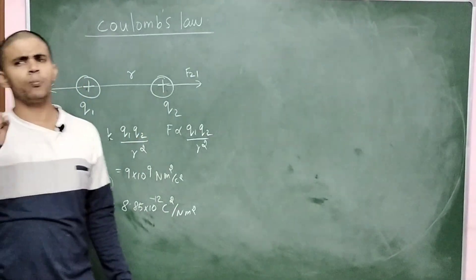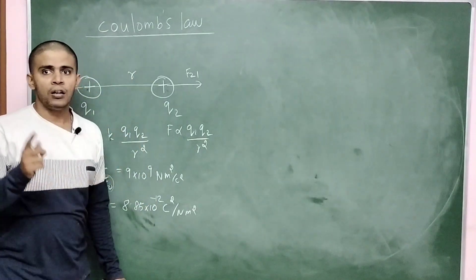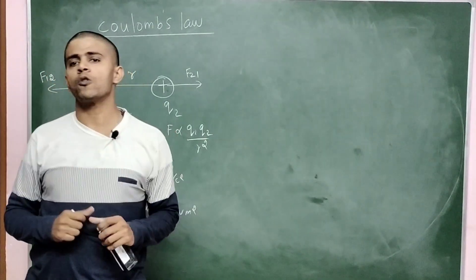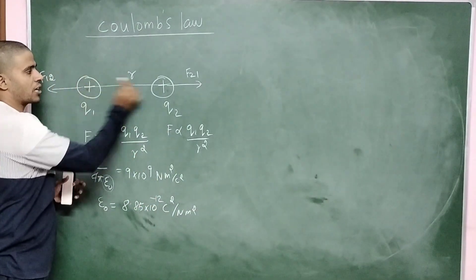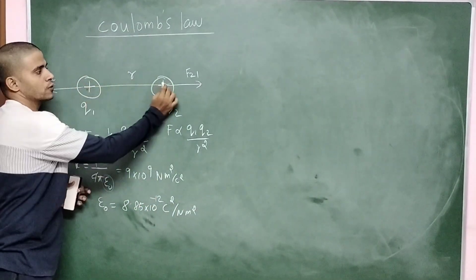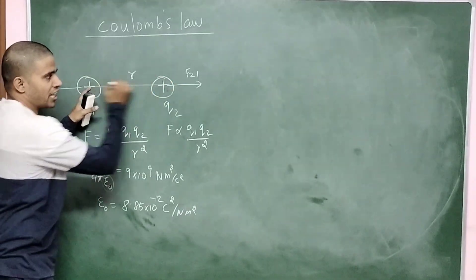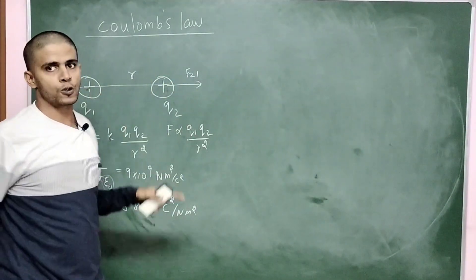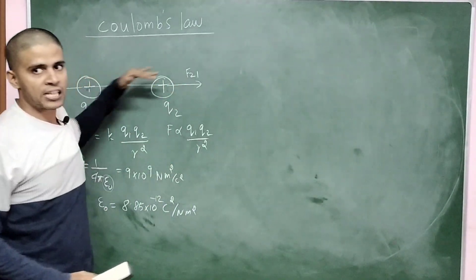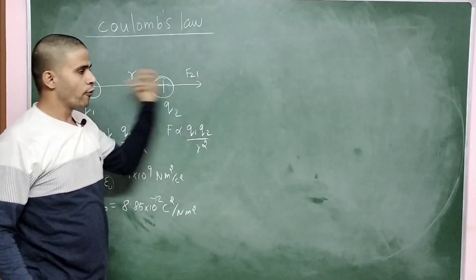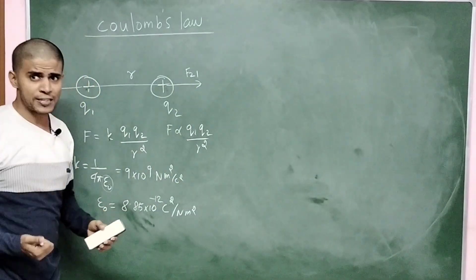One more important thing to understand: Coulomb's force is a central force. That means the force acts along the radial line connecting the centers of Q1 and Q2 — center to center — whether the force is repulsive or attractive.